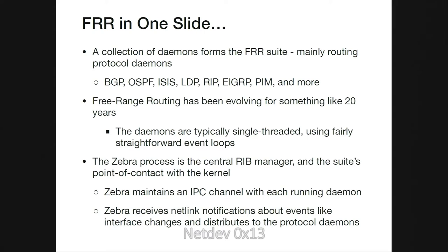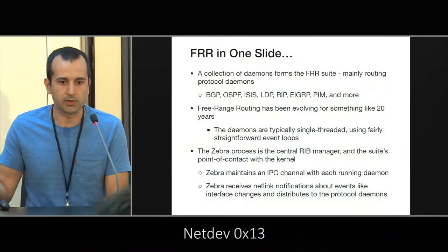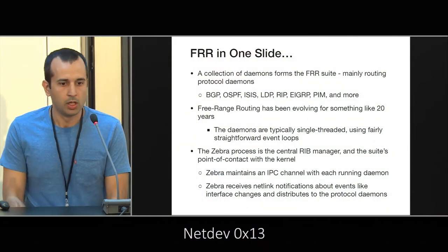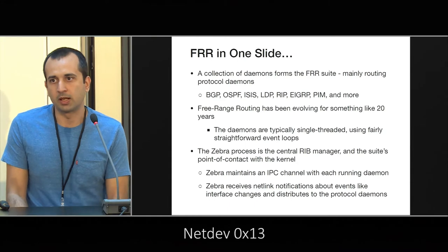I'm going to say briefly: FRR is a routing suite for Linux. It has other daemons which implement various protocols — there are a lot of them: BGP, OSPF, ISIS, and so on. And then there's Zebra, which is kind of special.